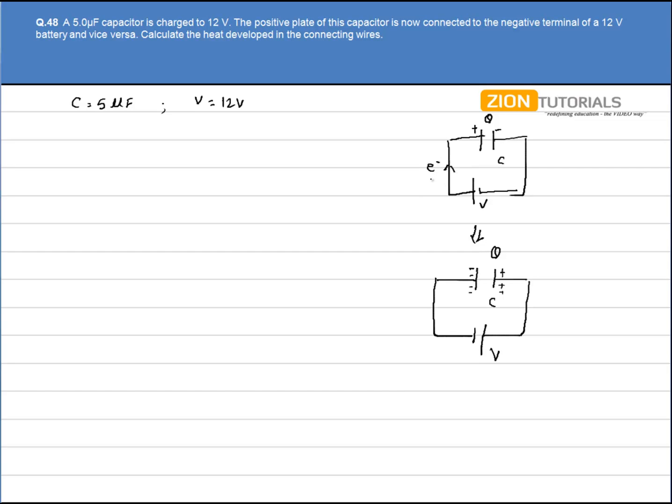If electron flows in this direction and we want a charge of minus Q over this plate, initially we have plus Q. So the charge that has to be flowed to make this plate negatively charged will be equal to Q minus minus Q, that is 2Q.